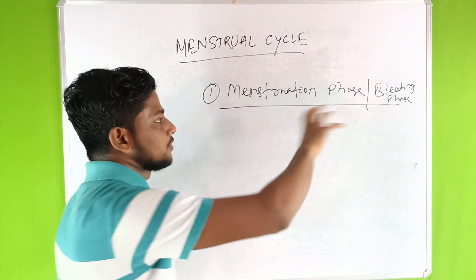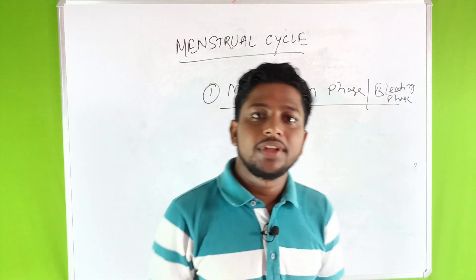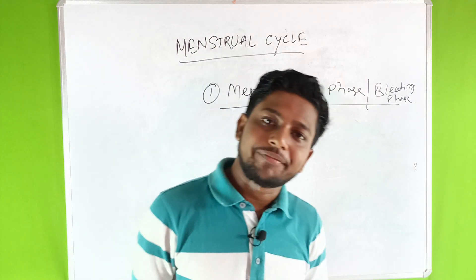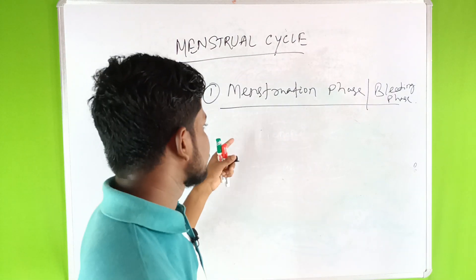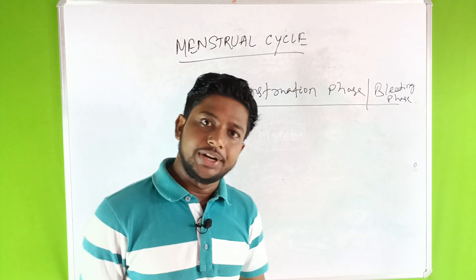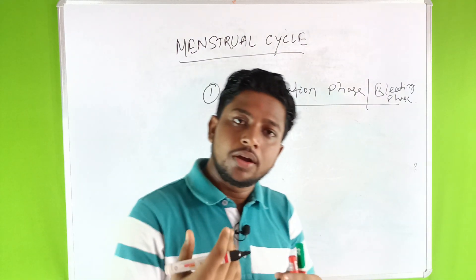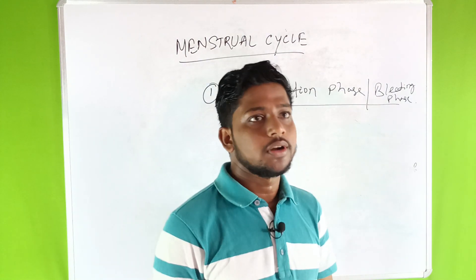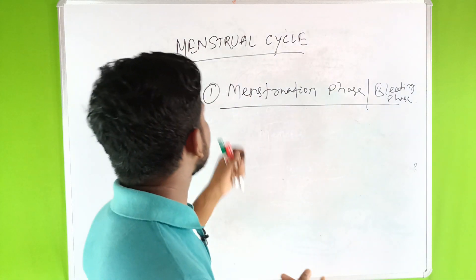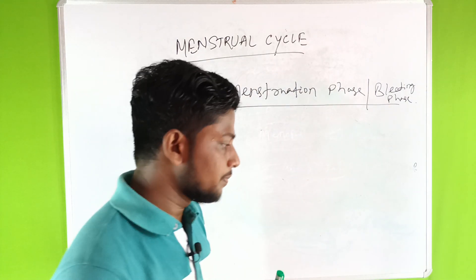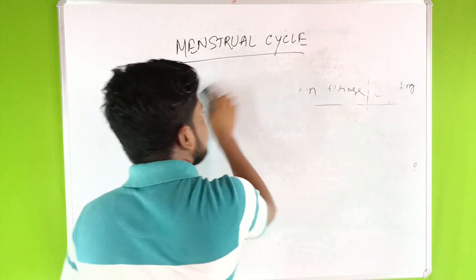During the menstrual cycle bleeding phase, females use sanitary napkins or pads to absorb the bleeding. After three to five days the bleeding phase continues and then stops, and the next phase begins — that is called the proliferative phase.